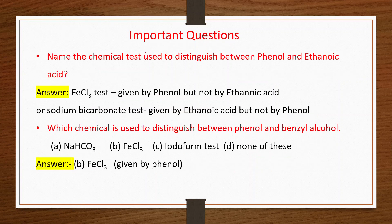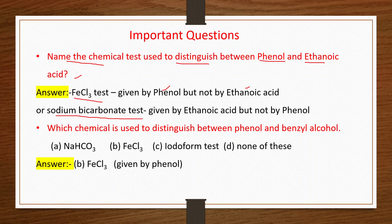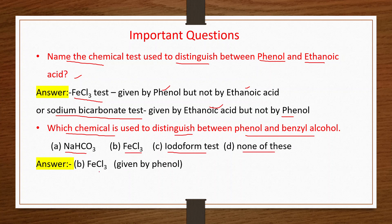Question: Name the chemical test to distinguish between phenol and ethanoic acid. Answer: FeCl₃ test — given by phenol but not by ethanoic acid. Alternatively, sodium bicarbonate test — given by ethanoic acid but not by phenol. Next question: Which chemical distinguishes phenol from benzyl alcohol? Answer: FeCl₃ — phenol gives a violet color with FeCl₃ while benzyl alcohol does not.